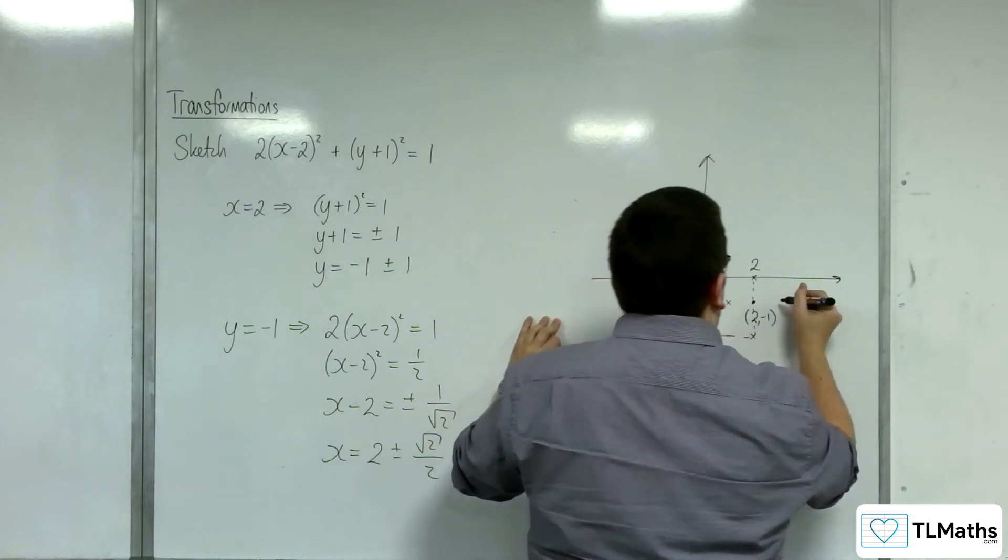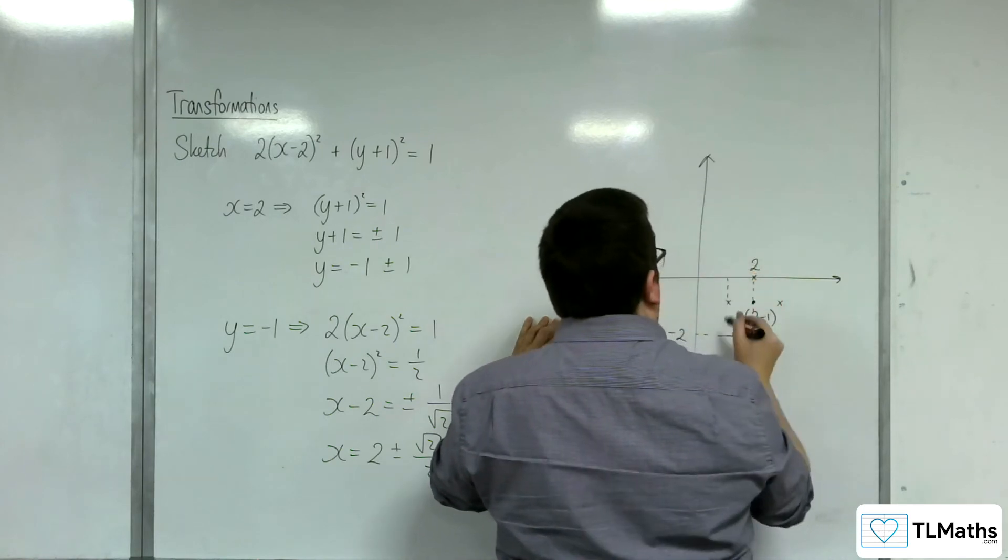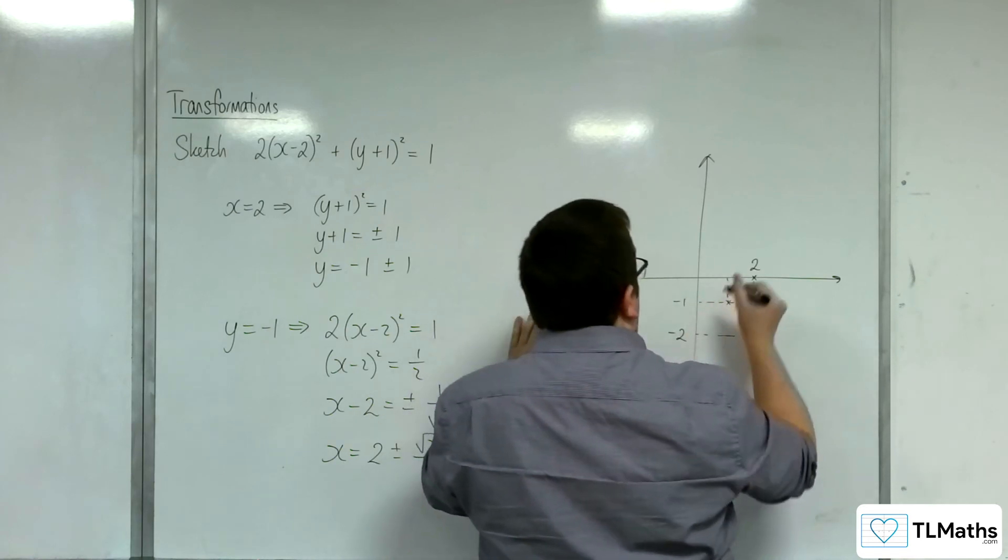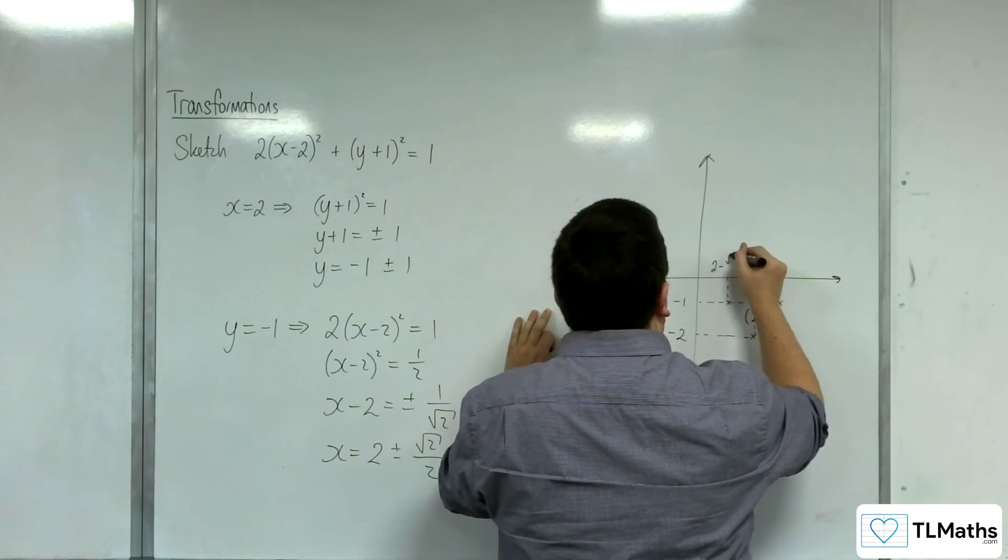Something like there and there. So that point is at y = -1. And this point is at 2 - √2/2.